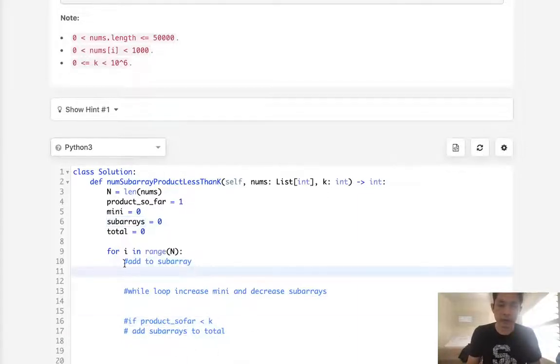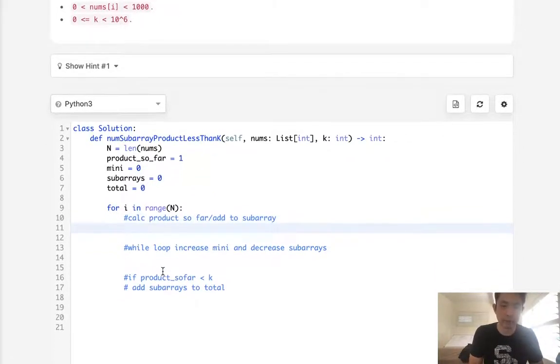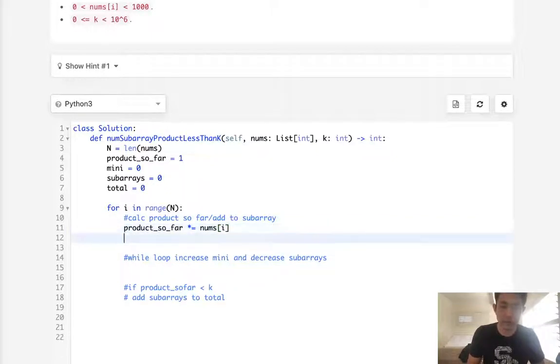All right, so we'll add to our subarray. We'll also calculate our products so far. First, we want to calculate our product so far. We'll do a multiply by the nums i.